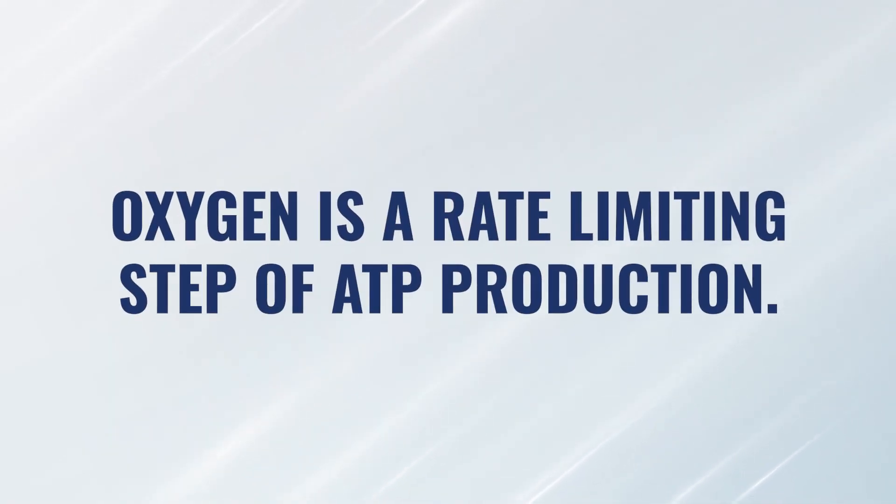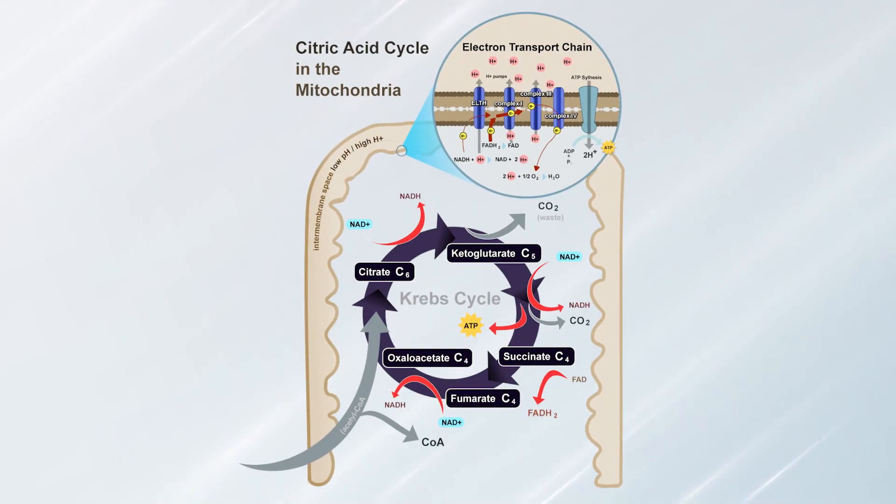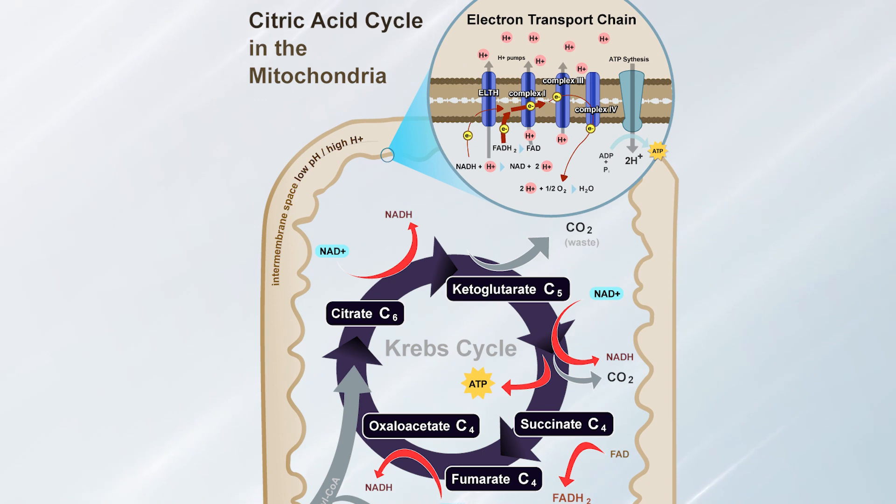Oxygen is a rate-limiting step to ATP production, meaning if we don't have enough oxygen moving into this area to be the final electron acceptor, the entire energy production process will cease to continue. So we need to drive oxygen into the cell, drive oxygen into the mitochondria. Oxygen moves into complex four, it is bound to hydrogen molecules, and as a result it creates water. So we talked about the waste products of cellular metabolism: carbon dioxide and water.